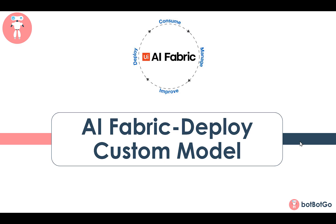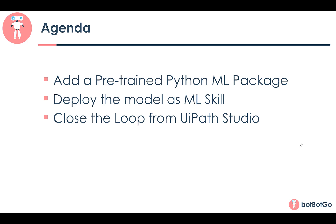So let's have a look at the agenda. First we'll go into AI Fabric and add a pre-trained Python ML package. Once this package has been added, we'll deploy it as an ML skill. And then we'll also see how to use this ML skill within UiPath Studio in order to close the loop.